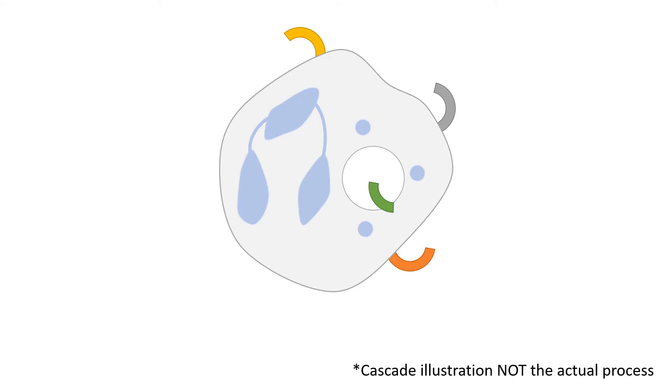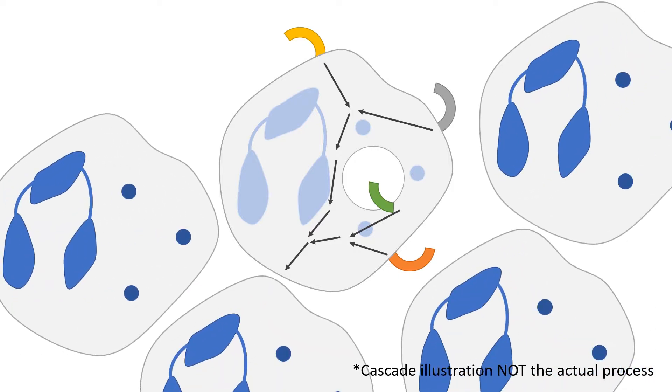The stimulation of these receptors can induce a signaling cascade, leading to the production of signaling molecules which attract more innate immune cells to the site of infection.